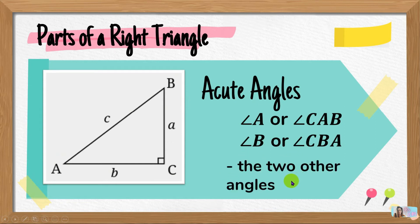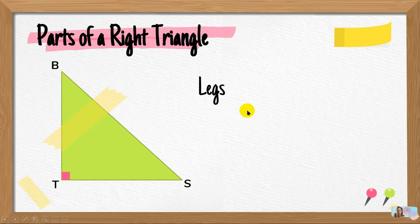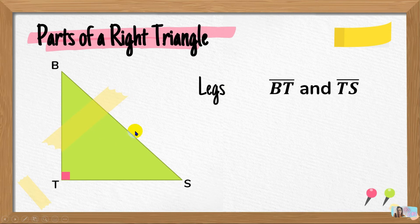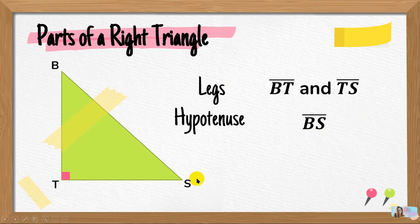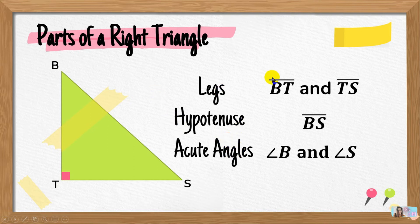Again, we have the hypotenuse and the legs, and for the angles, we have the right angle and the acute angles. Let's try to name the parts of triangle BTS. Which are the legs? We need to find the sides that form the right angle — those are side BT and side TS. The hypotenuse is the opposite side of our right angle, which is side BS or SB. For the right angle, we have angle T, and for the acute angles, we have angle B and angle S.